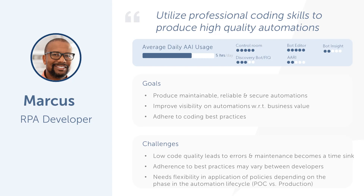Marcus has the flexibility to create policies that promote code quality based on the level of expertise that the developers working on different projects have. This enables his organization to utilize developers with different levels of experience and business process know-how to create automations. More available developers means a larger pipeline of automations.